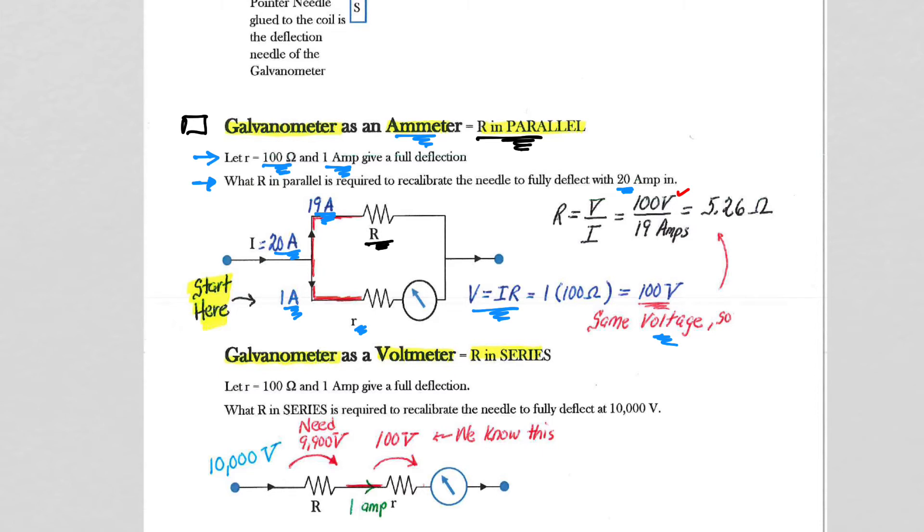We're pulling off the 19 amps so that our value that we need to have this galvanometer, 100 ohms at 1 amp, operate as a 20 amp meter, we need to pull off the 19 amps and have the 5.26 ohm resistor.